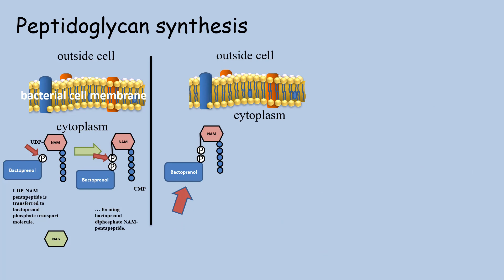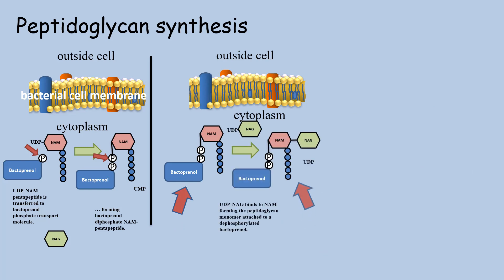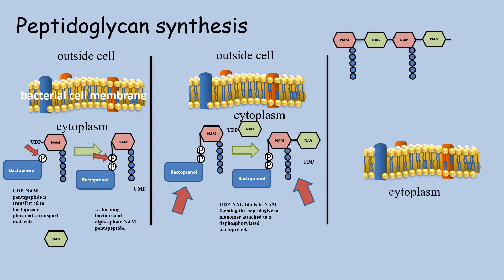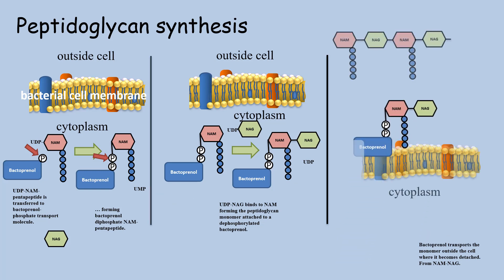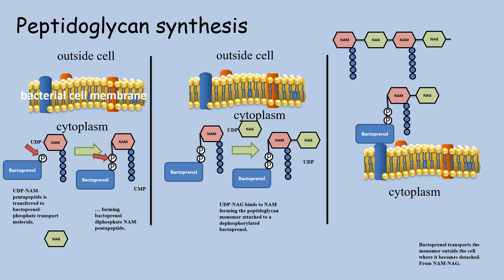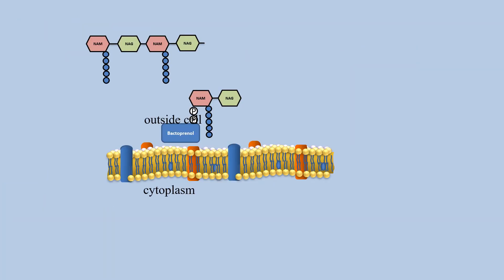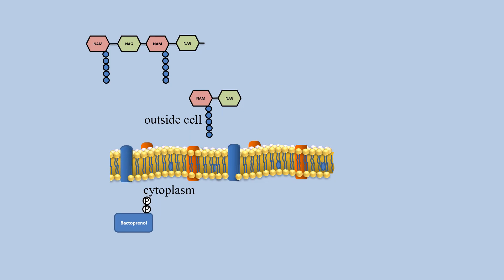Once bactoprenol is joined to NAM, it will bind to NAM, freeing UDP from NAG. Bactoprenol then transports the peptidoglycan disaccharide subunit across the cell membrane to the exterior of the cell. As the NAG and NAM disaccharide are released from bactoprenol, bactoprenol re-enters the cell and is dephosphorylated with the help of the enzyme phosphatase.